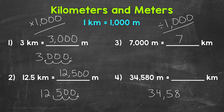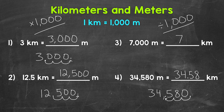So let's move that decimal 3 times to the left. So 34,580 — the decimal goes at the end of a whole number, and we will move it once, twice, and 3 times to the left. The decimal goes in between the 4 and the 5, and we get 34 and 58 hundredths, or 34.58. So 34,580 meters equals 34.58 kilometers. I did not include the trailing zero because zeros to the right of a decimal do not change the value, so typically we do not include them.